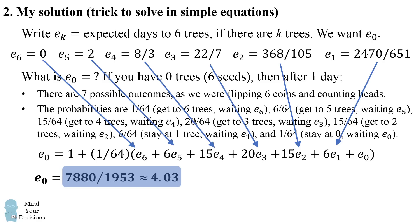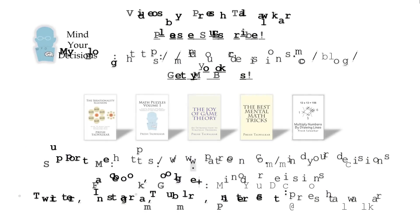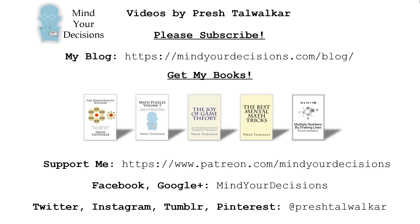So there are two different ways to approach this problem. The recurrence relation method has the added advantage that you also get the expected number of days when you have three trees, four trees, and so on. Did you figure out this problem, and which method did you use? Thanks for watching. Please subscribe to my channel — I make videos on math. You can catch me on my blog Mind Your Decisions, check out my books linked in the description, support me on Patreon, and find me on social media at Mind Your Decisions or at Presh Talwalkar.